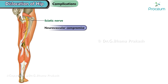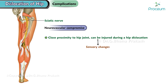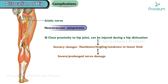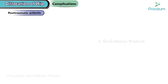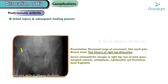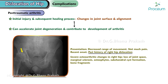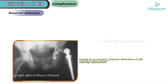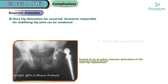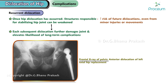Neurovascular compromise: the sciatic nerve, which is in close proximity to the hip joint, can be injured during a hip dislocation, leading to sensory changes such as numbness or tingling, as well as weakness in the lower limb. Severe or prolonged nerve damage can result in permanent disability. Post-traumatic arthritis: the initial injury and subsequent healing process can lead to changes in the joint surface and alignment, accelerating joint degeneration. Recurrent dislocation: once a hip dislocation has occurred, the structures responsible for stabilizing the joint can be weakened, increasing the risk of future dislocations, even from minor injuries or movements. Each subsequent dislocation further damages the joint and elevates the likelihood of long-term complications.